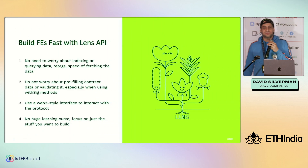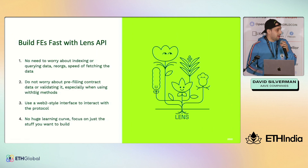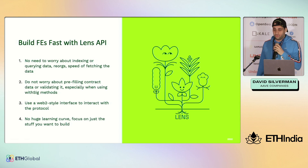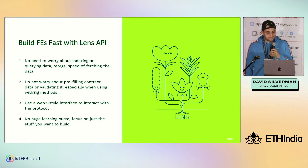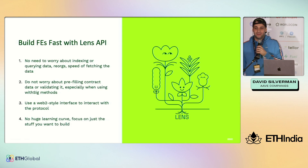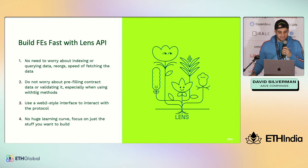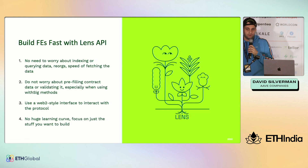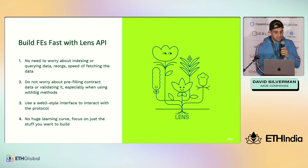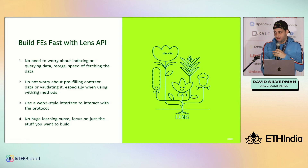Now over to the Lens API, which is the fastest way to build your own social application or use Lens data at all. Lens is entirely on-chain — anyone can access the data directly through a service like Alchemy or querying something like the Graph. However, we offer our own API. With the Lens API, you don't need to worry about indexing, querying, reorgs, or fetching data. You don't have to worry about pre-filling contract data, validating it, or using weird with-sig methods. Our real goal is to offer something easy to approach for development. It looks and feels like a Web2 GraphQL API — simple to interact with, not a huge learning curve. You can just focus on the stuff you want to build.